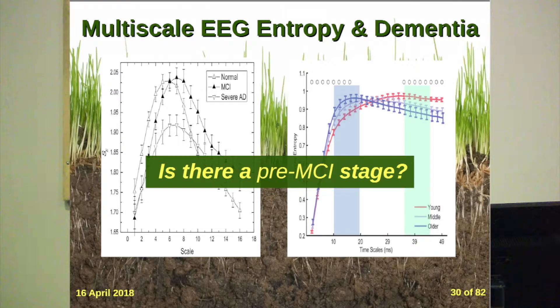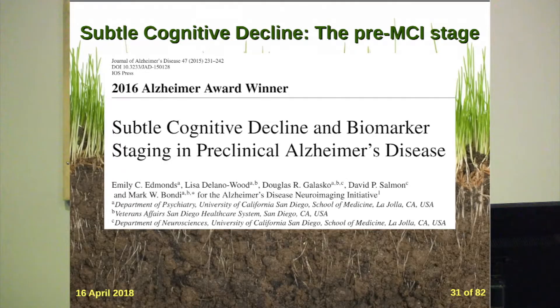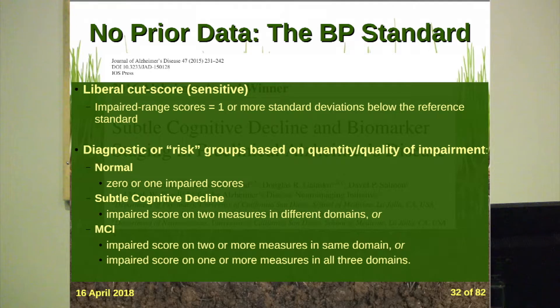There must be a stage before mild cognitive impairment. If there's dementia, normal, and MCI between them, there must be something between normal and MCI. Indeed, there is a pre-MCI stage. Recently Emily Edmonds and Bondi described criteria for a stage they call subtle cognitive decline, or SCD. This uses neuropsychological test data with very liberal cut scores — impaired range scores of only one or more standard deviations below, which is very sensitive. They test people with neuropsych measures and count up impaired scores to diagnose them as normal, subtle decline, or MCI based on more and more impairment.